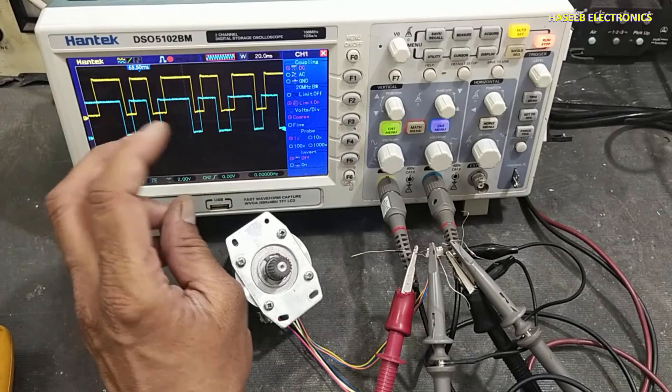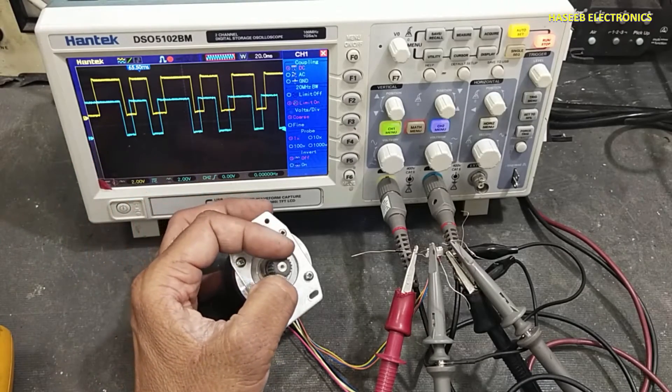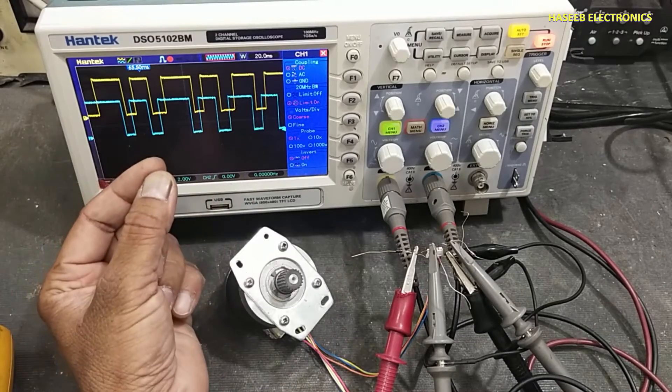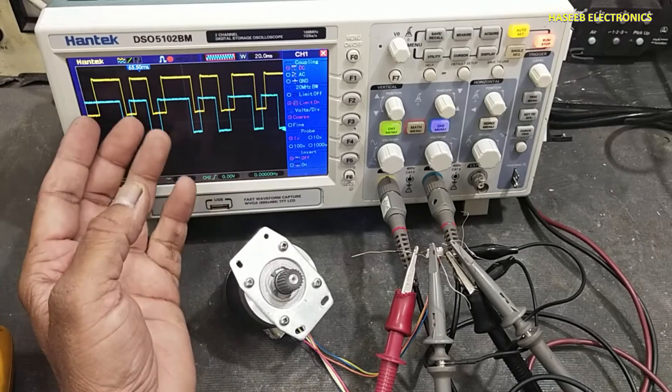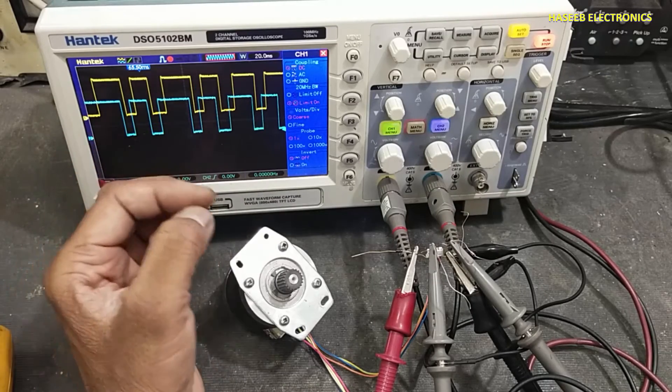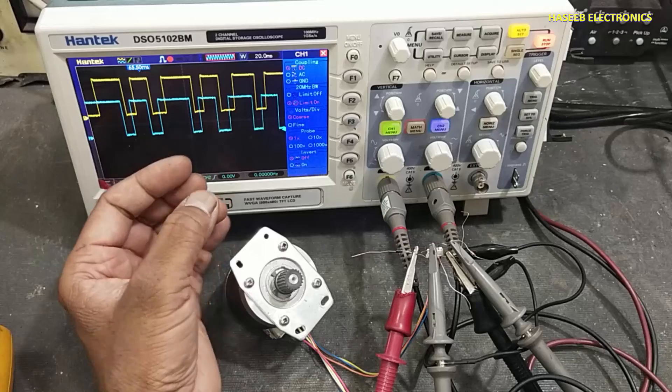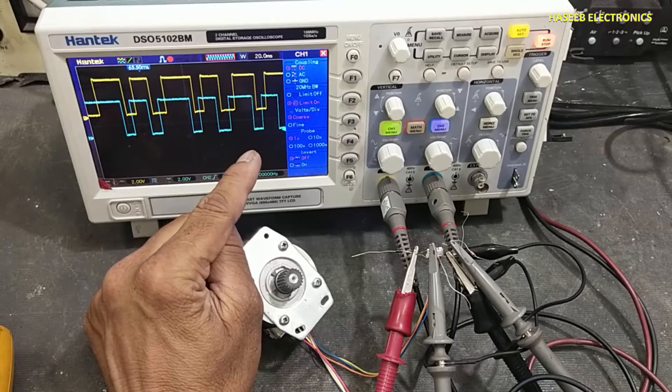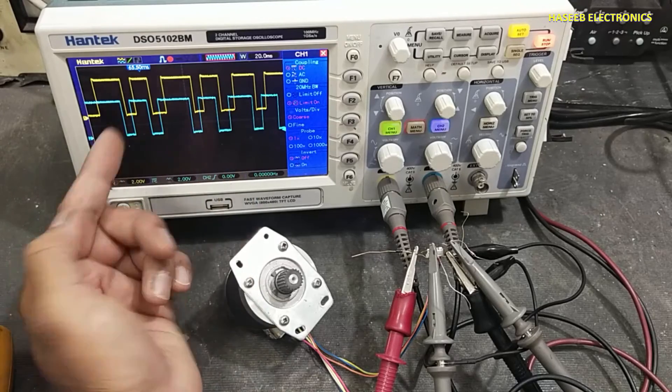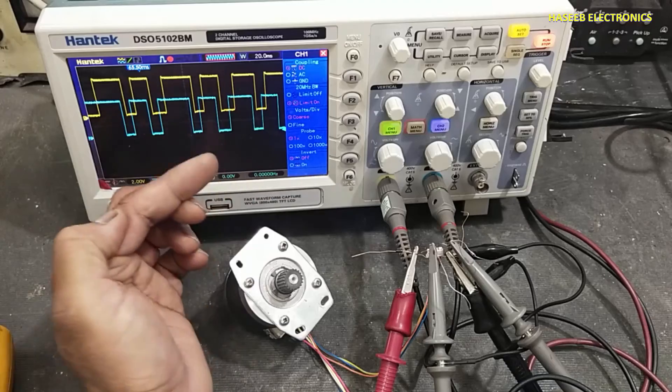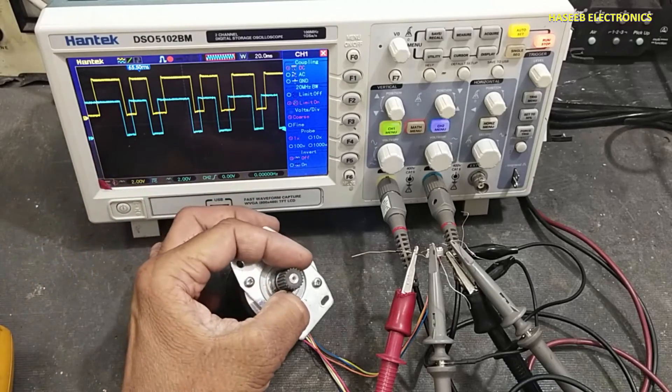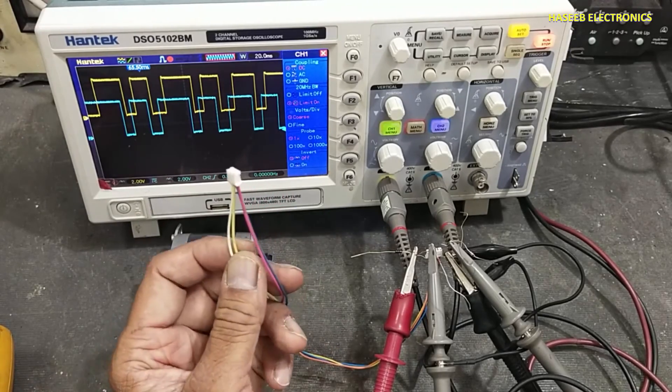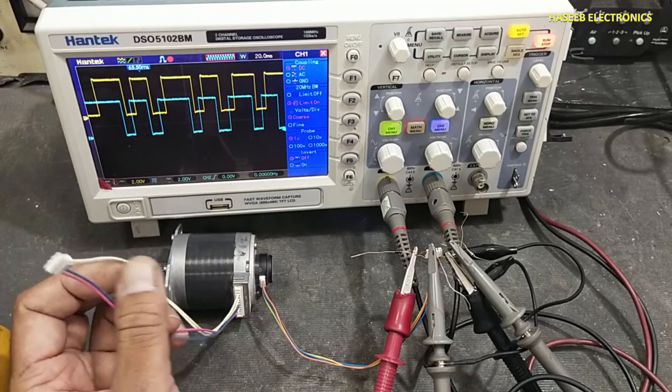In this way we can verify the function of this optical encoder E4P. If the signal is distorted or any signal is missing, channel A or channel B, at that time computer or microcontroller cannot determine the rotation and the direction. Based on that feedback, the computer will determine the drive signal for this stepper motor.